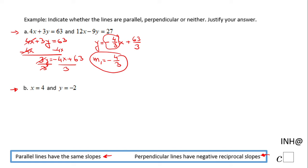Similarly, we're going to do the second line in this problem: 12x minus 9y equals 27. I'm going to subtract 12x on both sides.